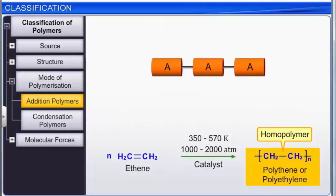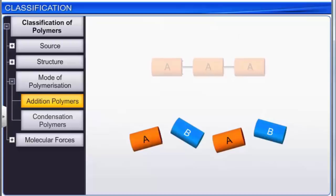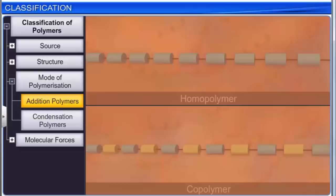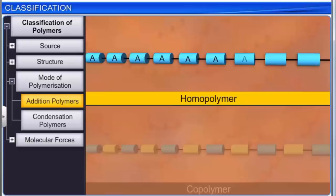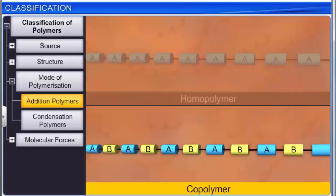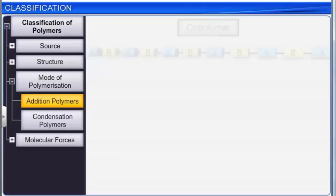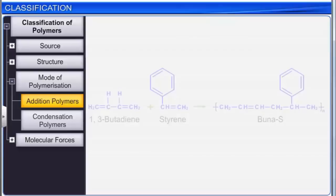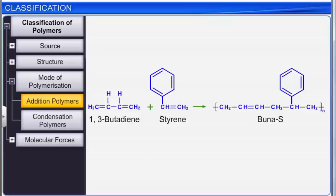In contrast to homopolymers, co-polymers are obtained by the addition polymerization of two different monomers. The first illustration shows many identical monomer units polymerizing into a straight chain homopolymer. The second illustration shows a co-polymer with a repeating AB pattern. Two important examples of co-polymers are Buna-S and Buna-N. The general scheme for the addition reaction for Buna-S shows 1,3-butadiene and styrene combining to form a butadiene-styrene co-polymer.